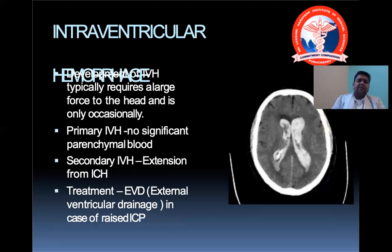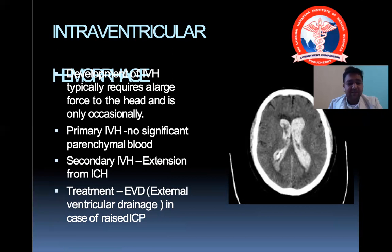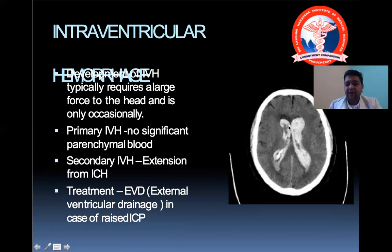Intraventricular hemorrhage (IVH) occurs when a large force is involved. Primary IVH has no parenchymal bleed; secondary IVH is an extension from primary ICH. Treatment is external ventricular drainage in cases of raised ICP. On CT, the ventricles (normally black as they are filled with CSF) appear white due to blood and clot, and an external drain is inserted to drain the ventricle.